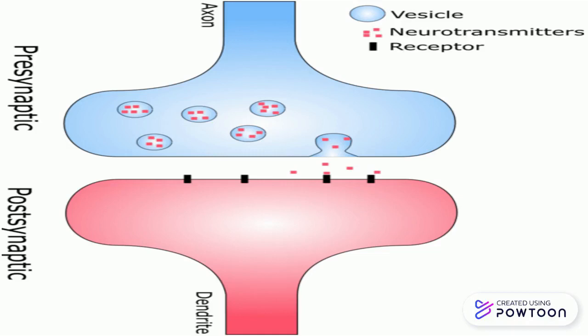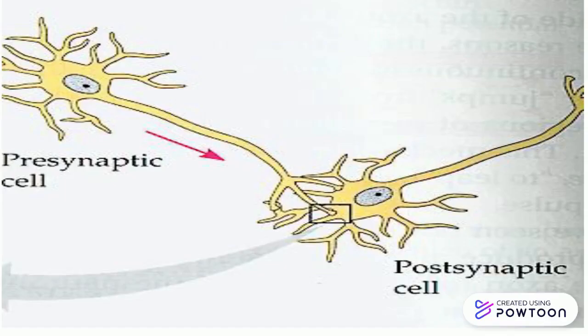The process between the presynaptic and the postsynaptic neurons is a one-way process that will stimulate or inhibit communication to the postsynaptic cell. The synaptic communication is carried out through a neurotransmitter.